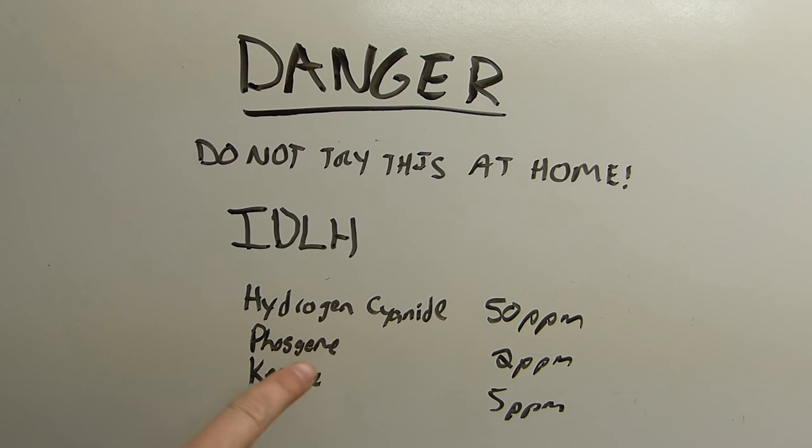If you look, these are the IDLH values for several compounds here. That's the immediately dangerous to life and health values, as established by a government agency whose job it is to set workplace threshold standards for a lot of compounds. Now these aren't the safe thresholds. These are the immediately dangerous to life and health thresholds. This is the causing damage type threshold.